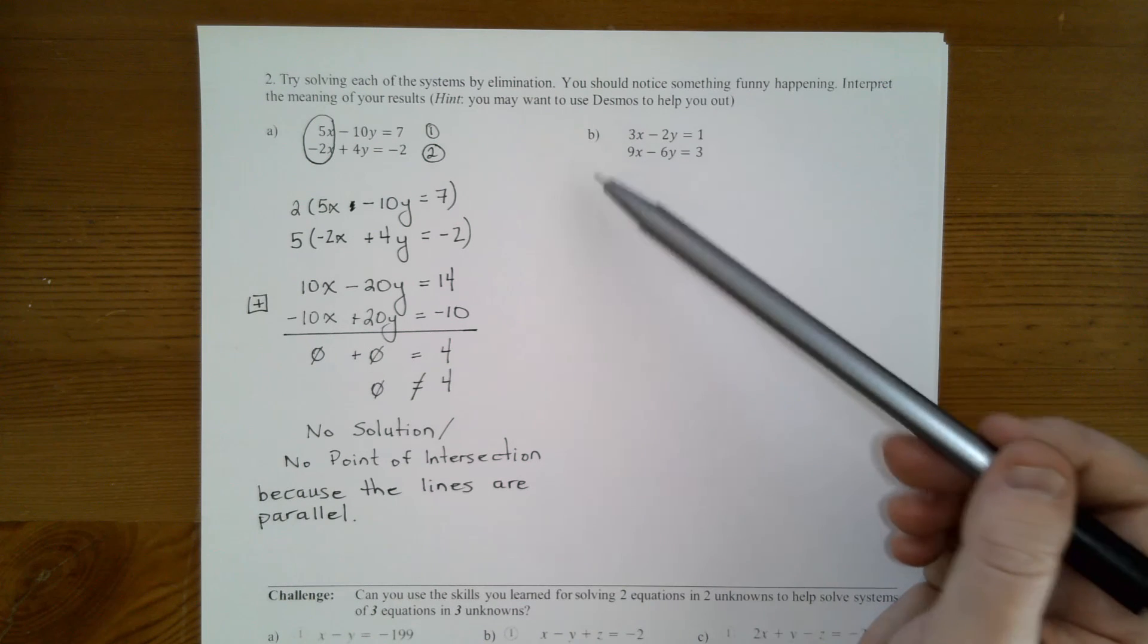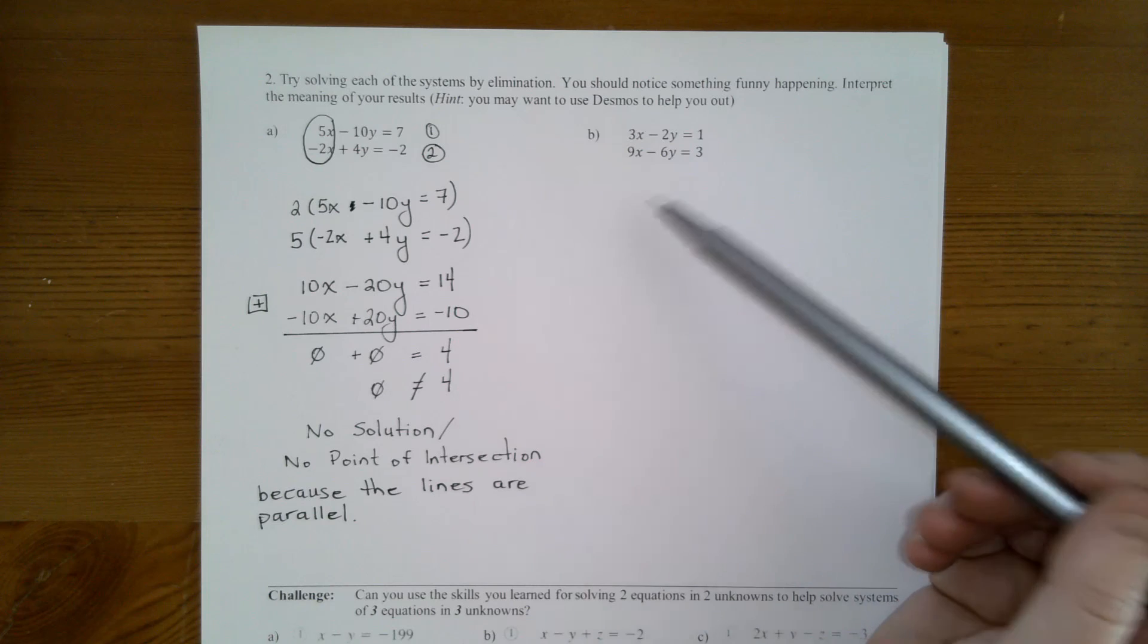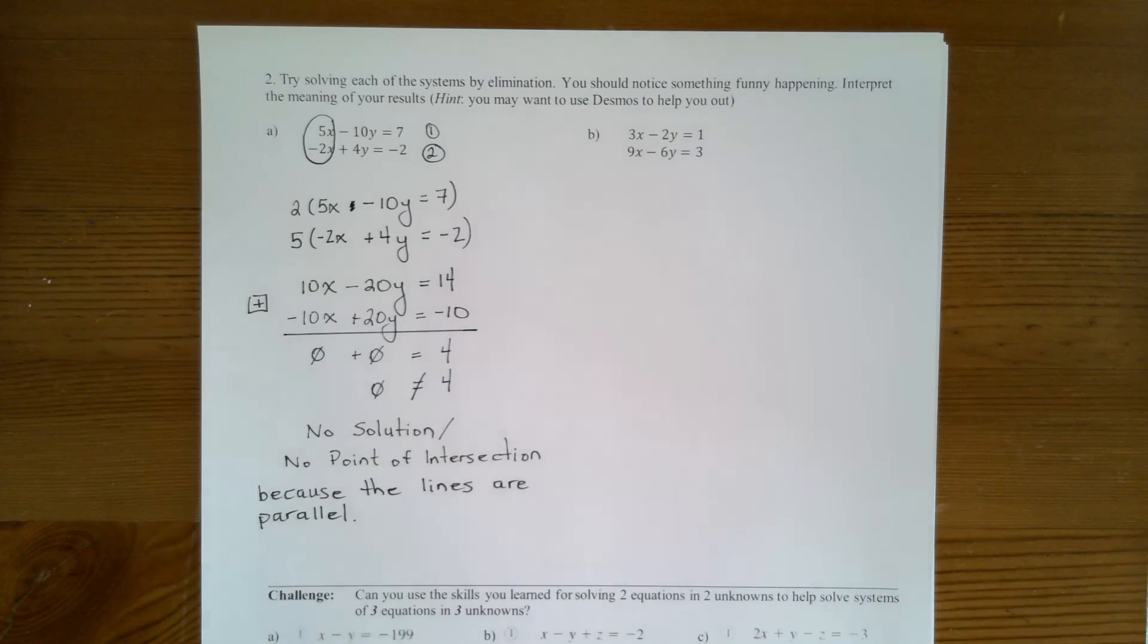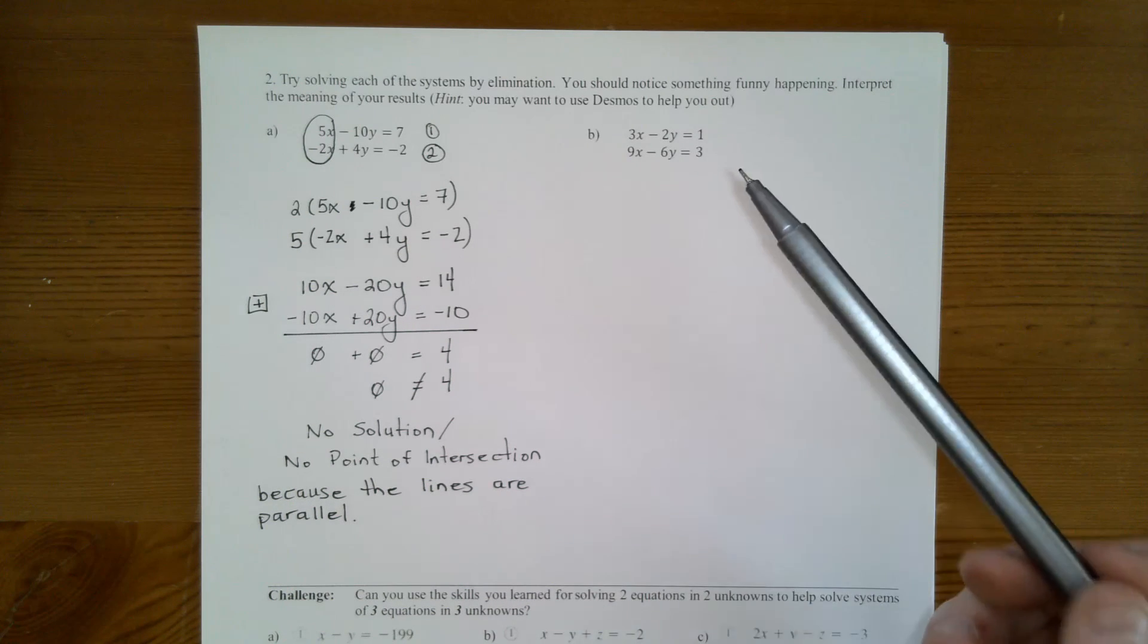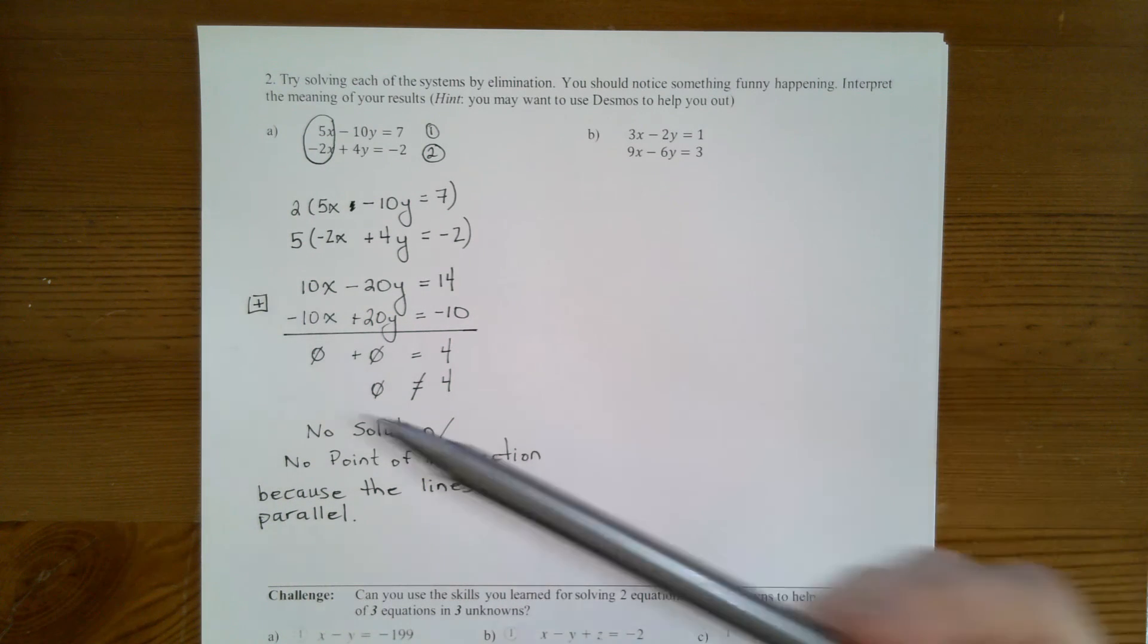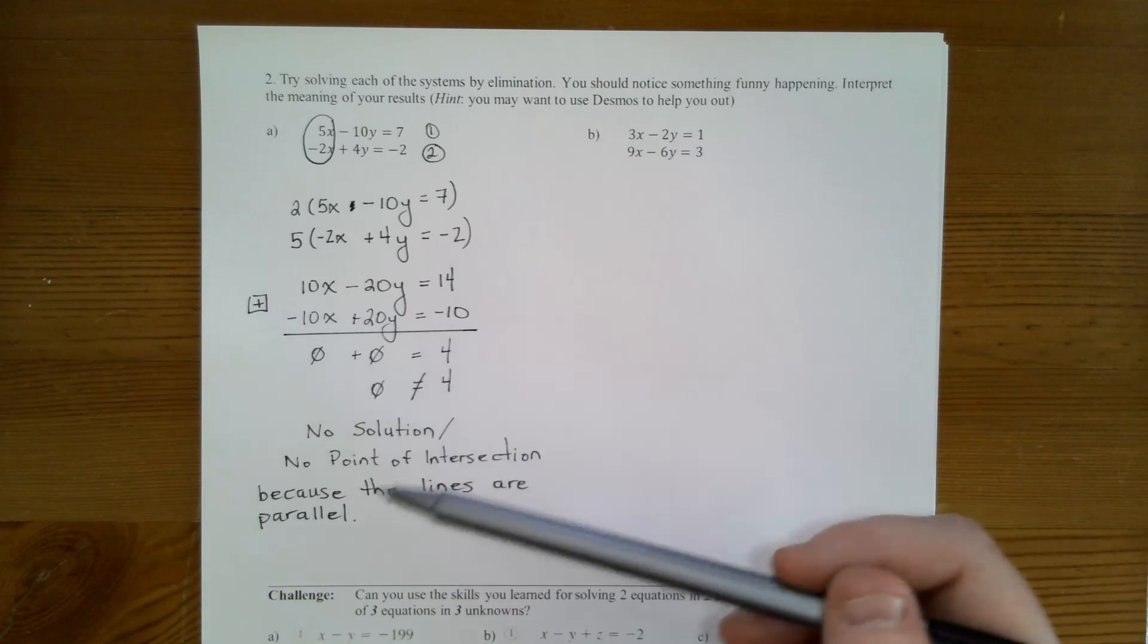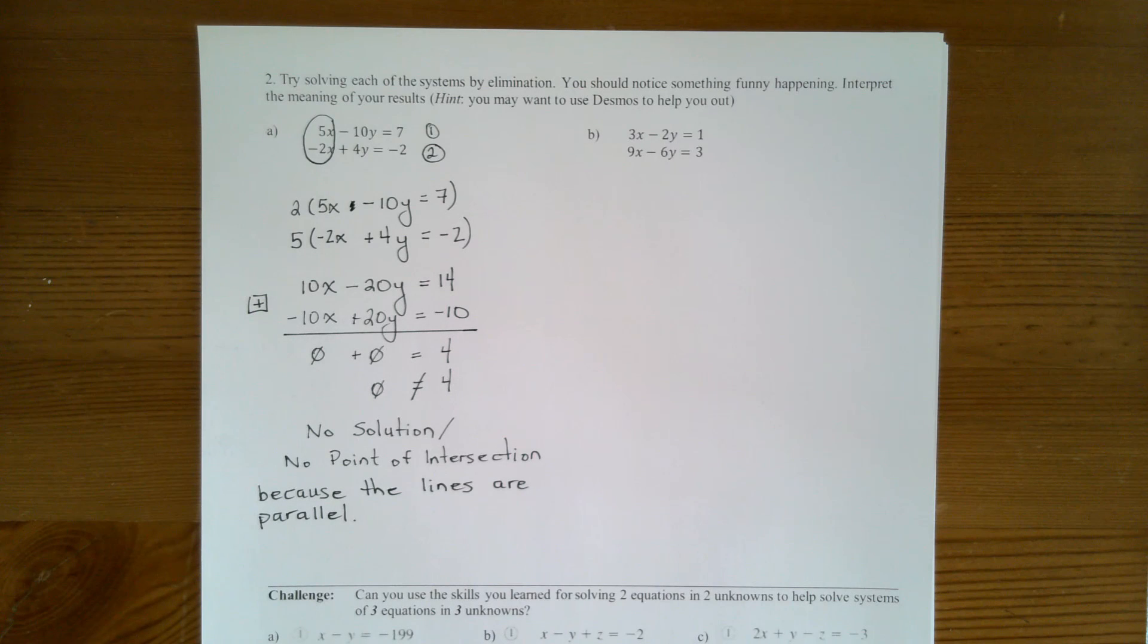And then go ahead and do B because B is not going to be quite the same. Something different that's funny is going to happen. So go ahead and do B, put them into Desmos and see if you can see what's going on and then see if you can come up with a rule to be able to check to see if they're parallel or if they have a point of intersection or if this funny thing happens. Hope that helps.